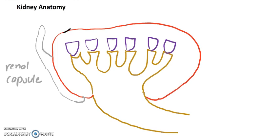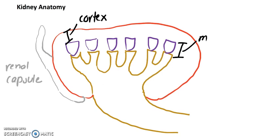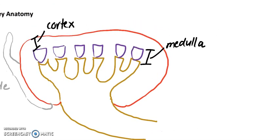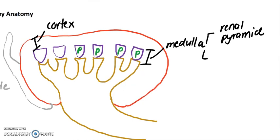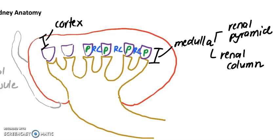This first outer region — from the outside to the space of the pyramid — is called the cortex. From the base of the pyramid down to the beginning of the fork, we call this region the medulla. The medulla consists of two parts: the renal pyramids — the triangles you see — and the renal columns, which flank the pyramids on each side.